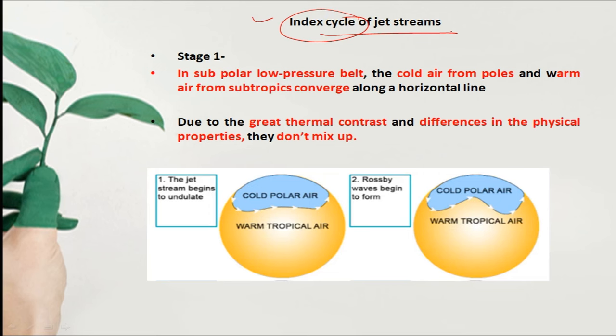Now for the index cycle of jet stream. In stage 1, in the sub-polar low pressure belt, there is cold polar air, and in the tropical area there is warm air. At first, these two do not mix.